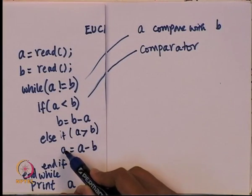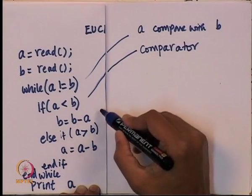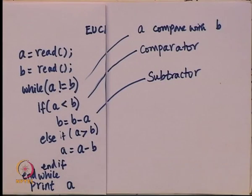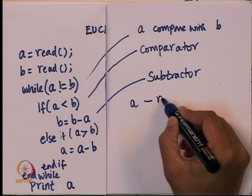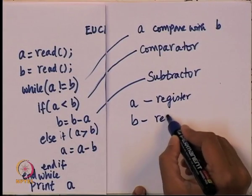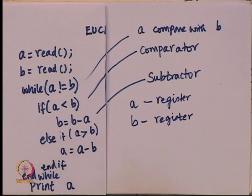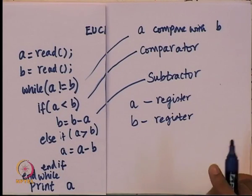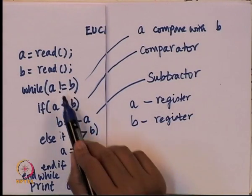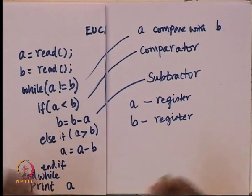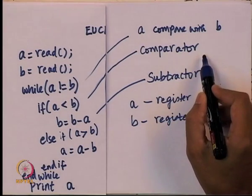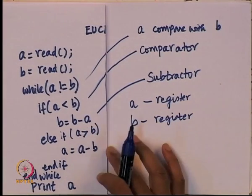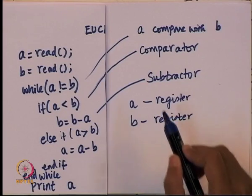Looking at B equals B minus A and A equals A minus B, this seems to indicate that I need to be able to subtract one from the other. So I need a subtractor. We have not looked at arithmetic circuits in the course so far. What we are going to do in Verilog is use a high-level description, but we can discuss the actual circuitry for comparators and subtractors in next week's class.